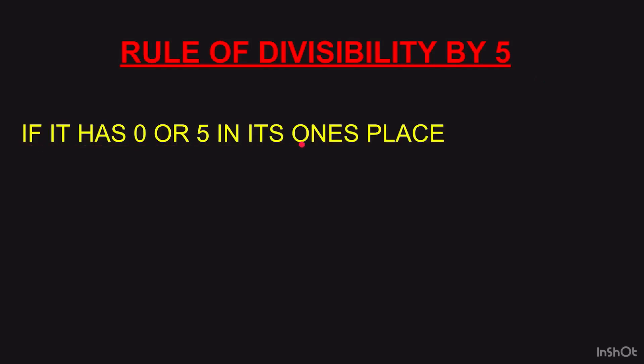Rule of divisibility by 5: if a number has 0 or 5 in its 1's place, it is divisible by 5. Just by looking at the number you can tell — 20 has 0 in the 1's place, so it is divisible by 5. 365 has 5 in the 1's place, so it is also divisible by 5.